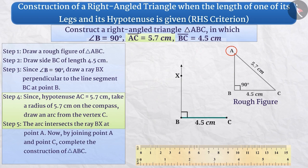Step 4. The length of the hypotenuse AC is 5.7 cm. This means that the vertex A is at a distance of 5.7 cm from the vertex C. So,